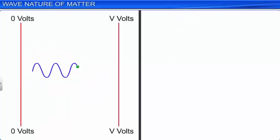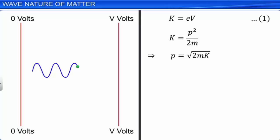The kinetic energy of an electron is equal to the work done on it by the electric field: K = eV — let this be equation 1. The kinetic energy of the electron is also equal to p²/2m, where p is its momentum and m is its mass. This equation can be rewritten as p = √(2mK). Substituting the value of K from equation 1, we get p = √(2meV). The De Broglie wavelength is now calculated by substituting h and p: λ = h/√(2meV).